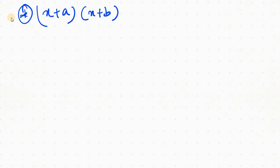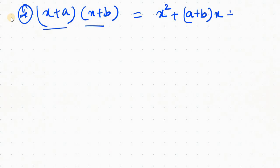We will have the formula. The formula is x plus a equal to x plus b. If you can see the formula, we can get the formula from the last chapter. The formula is x squared plus a plus b, equal to x plus ab.